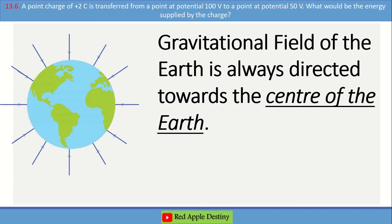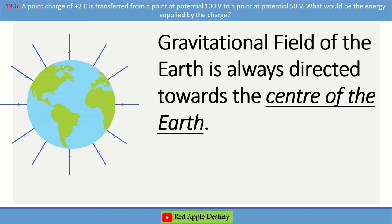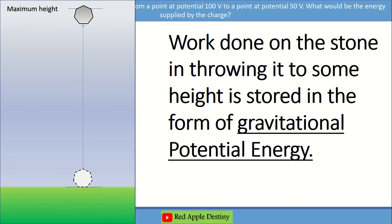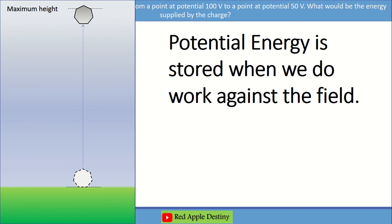Consider the Earth's gravitational field — its direction is toward the center of the Earth. If we have a stone at a certain height, we store work as potential energy, because we are working against the gravitational field direction. We can say potential energy is stored when work is done against the field.